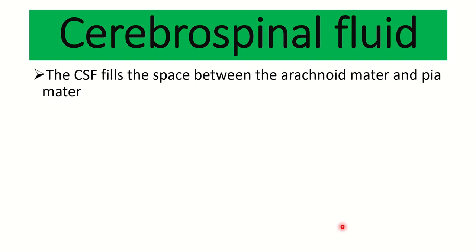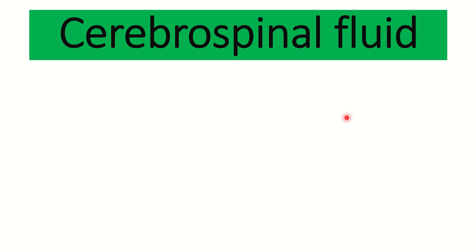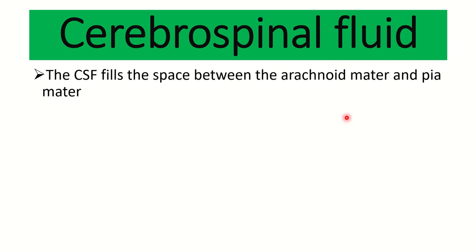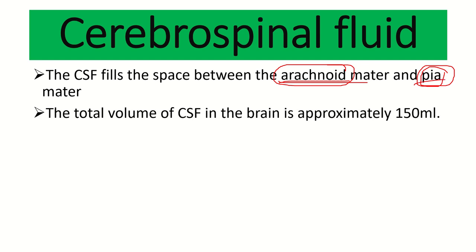The CSF fills the space between the arachnoid mater and pia mater — that is, the subarachnoid space. The cerebrospinal fluid is located within this subarachnoid space, both in the brain tissue and in the spinal cord.